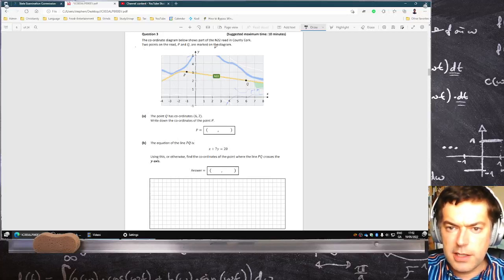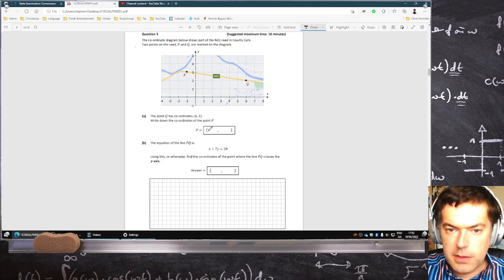Coordinate diagram shows part of the N22 route the core. Two points P and Q are marked on it. Find the coordinates of P. P is minus 1, 3.